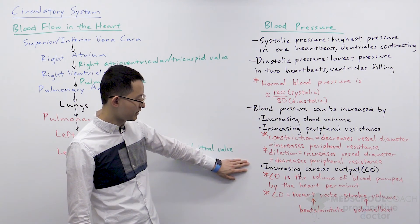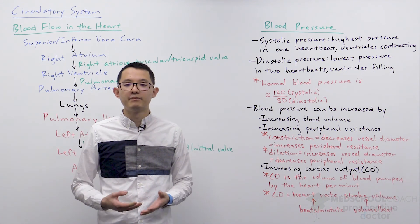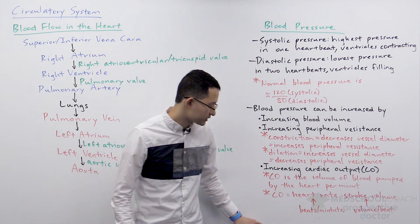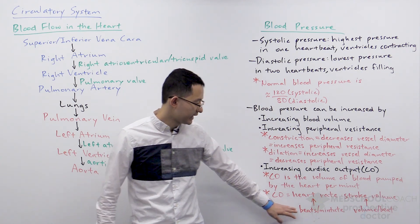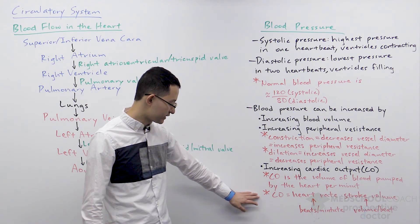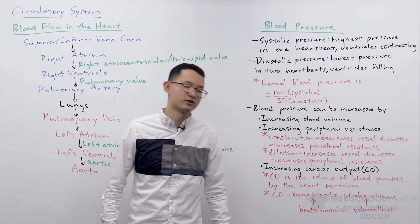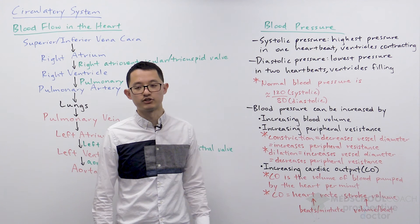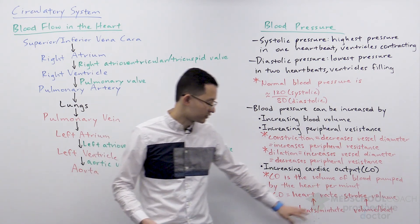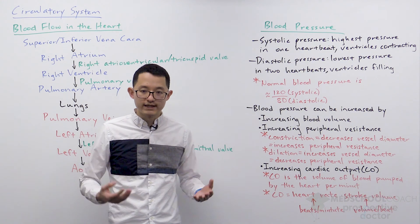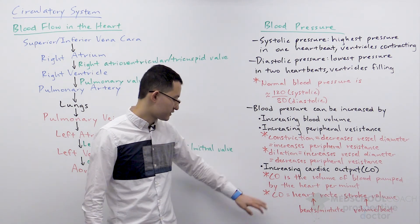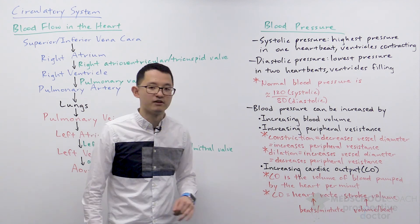Finally, another factor that can affect blood pressure is cardiac output, defined as the volume of blood pumped from the heart per minute. It equals the product of heart rate, which is beats per minute, and stroke volume, which is the volume of blood pumped per heartbeat. If you increase cardiac output — either through increasing heart rate or stroke volume — that will also increase blood pressure. This happens regularly during exercise: when you start running, both heart rate and stroke volume increase to deliver more oxygenated blood, resulting in increased blood pressure.